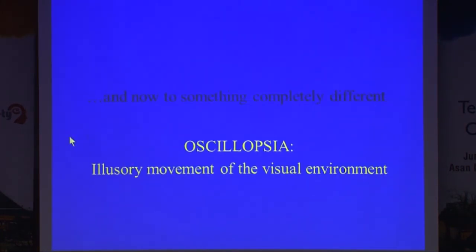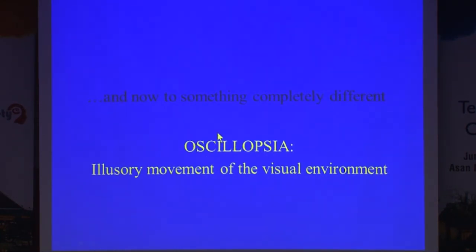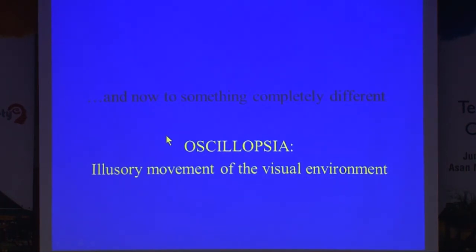Now to something completely different: oscillopsia. Oscillopsia is a different syndrome — it's illusory movement of the visual environment. To be really simple, oscillopsia is a much more serious symptom than visual vertigo. Nobody dies from visual vertigo. But if you happen to have oscillopsia because of a Chiari malformation and downbeat nystagmus, you might break your neck during a football match.